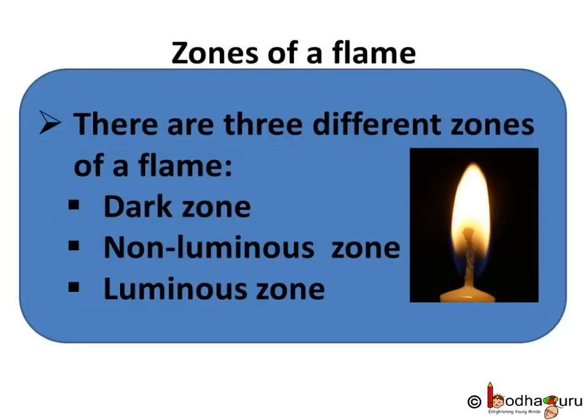We also learnt about the three different zones of a flame. The dark zone is the innermost part — it looks dark and is the least hot part. The non-luminous zone is the external bluish part of the flame and is the hottest part. The third part is the luminous zone — it is the brightest part of the flame and is a little cooler than the non-luminous zone.